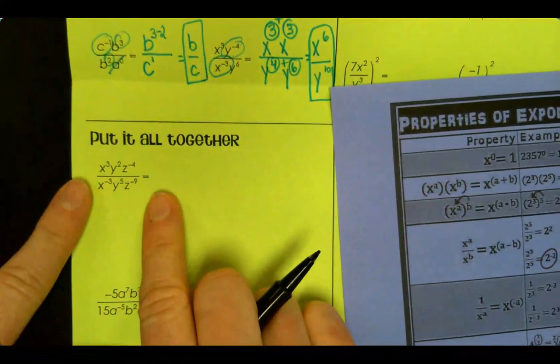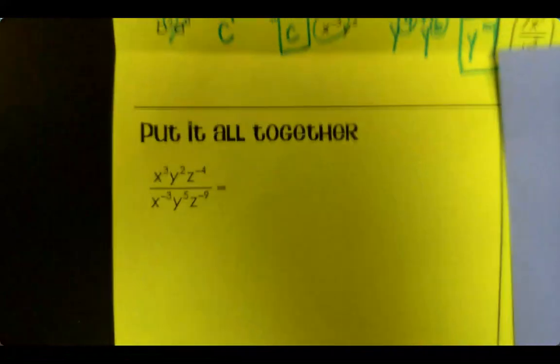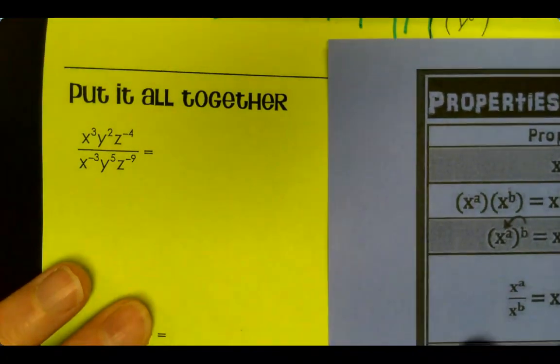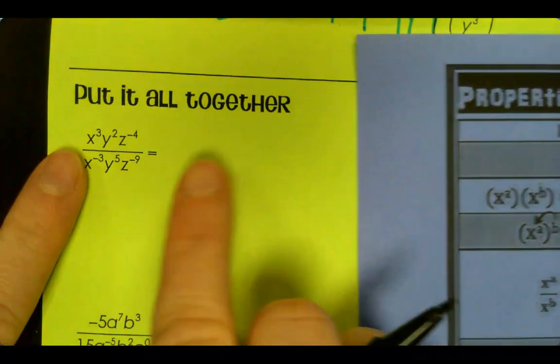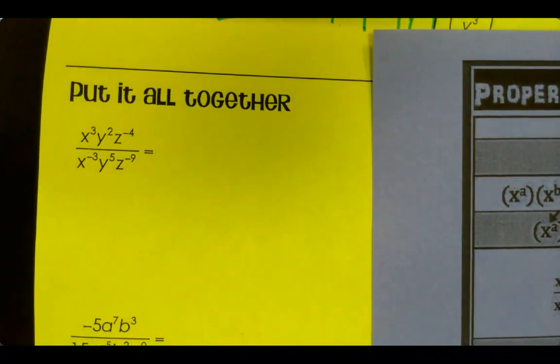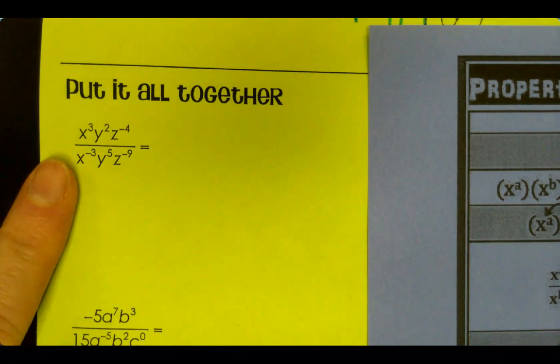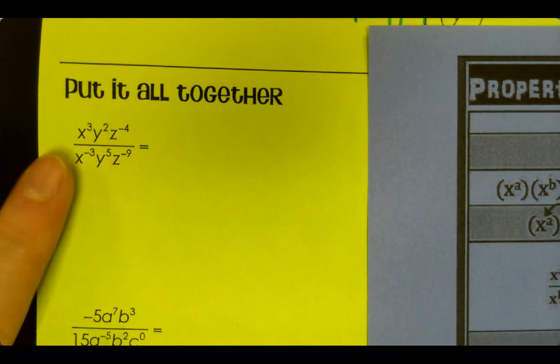Alright. So let's review. We're going to do this problem together. First thing I usually want to do is get rid of any negative exponents. So I'm going to look at this, look at the negative exponents, move them around, keep everything else where it's at.